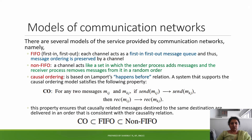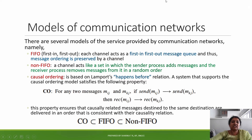If we are satisfied with this property, we receive a message. There are two messages: Mij and Mkj. We receive both Mij and Mkj.